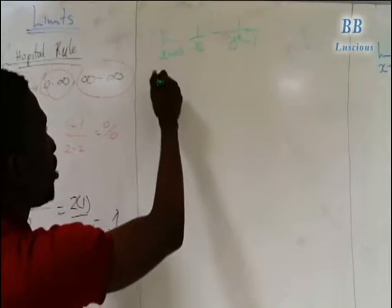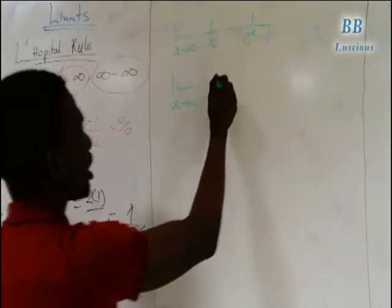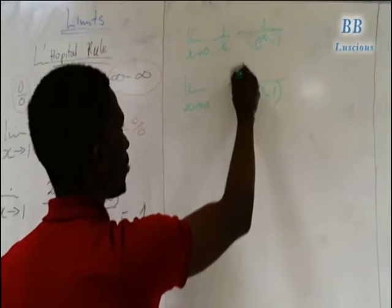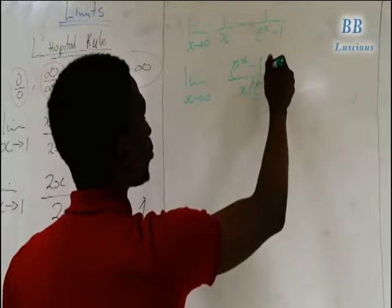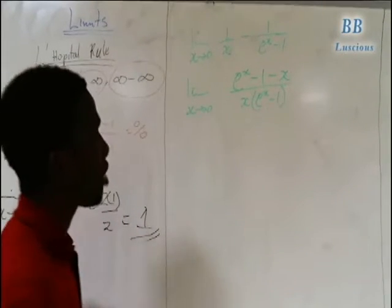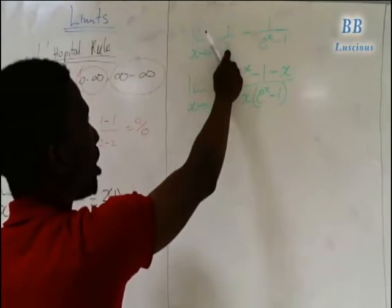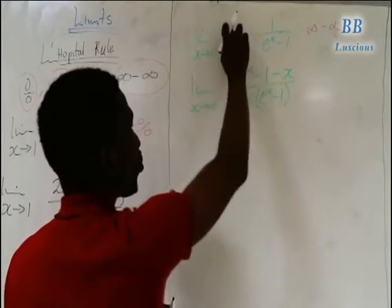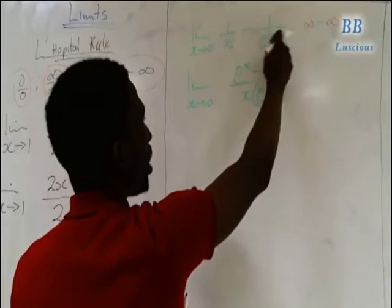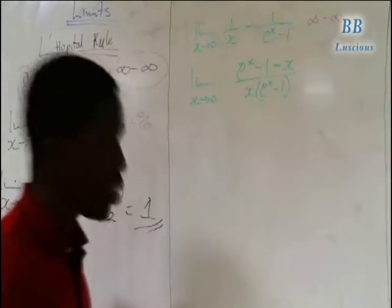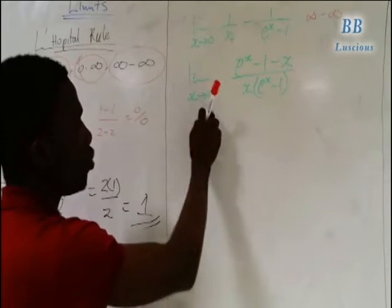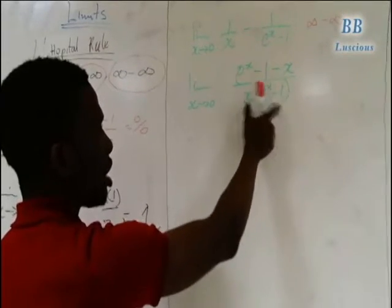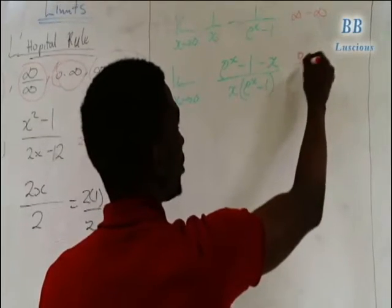Now let's say we have a new example. The first thing to do is find the LCM. The numerator becomes e^x minus 1 minus x, and the denominator is x times (e^x minus 1). Note that substituting 0 gives 1 over 0, which is infinity, so we have infinity minus infinity. When we put 0 in, the numerator gives 1 minus 1 equals 0, and the denominator also gives 0, so we have 0 over 0.